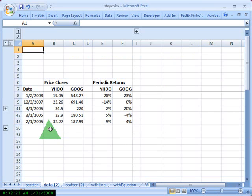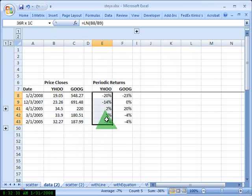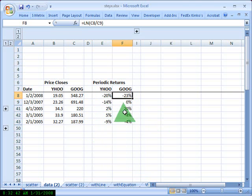Here's the data. I have the monthly dates and then the price closes for Yahoo and Google, and then I calculated periodic returns for Yahoo and Google. So for example, for the month of December, Yahoo lost 20% and Google lost 23%. So that's the data for my scatter plot. I do have three years or 36 months. I just collapsed the rows in between to make this more manageable.